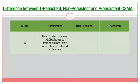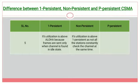Coming to utilization: in one persistent, its utilization is above that of the ALOHA protocols because frames are sent only when the channel is found idle. In non persistent, its utilization is above one persistent, as not all stations constantly check the channel at the same time. The channel utilization of p persistent is dependent on the probability p.